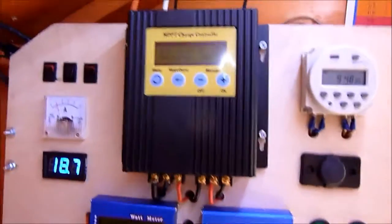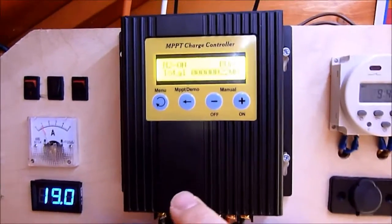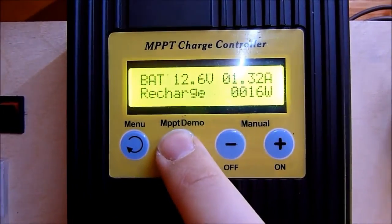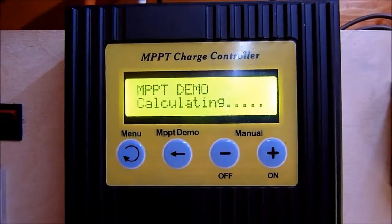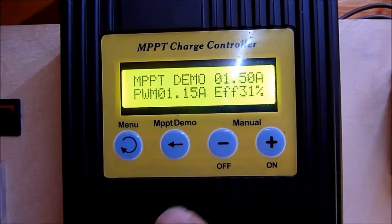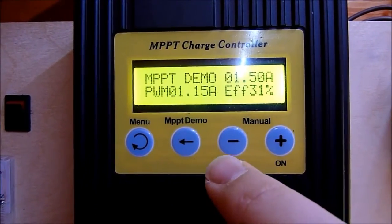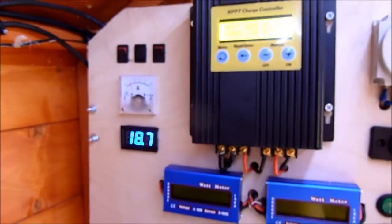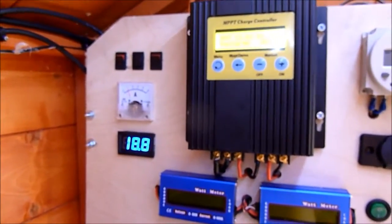And the charge controller, let's see if we can get that doing its demo. It says PWM 1.15 amp and 1.5 amp, so my efficiency is up 31% because I'm not bringing my solar panels down to the battery voltage.